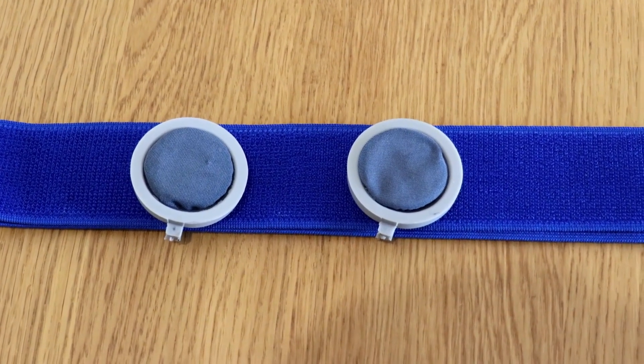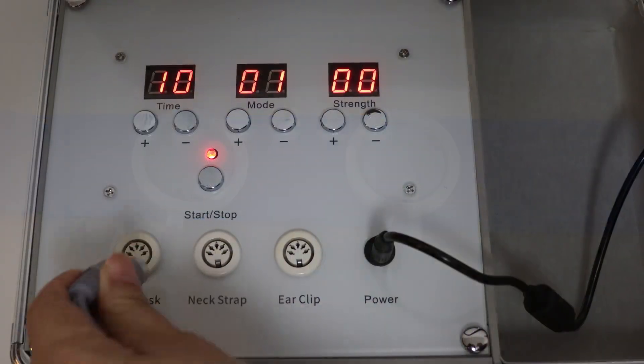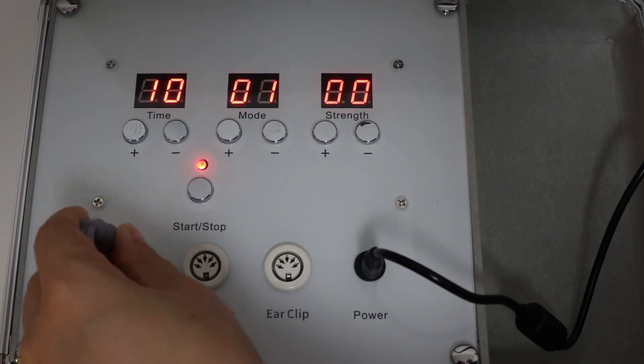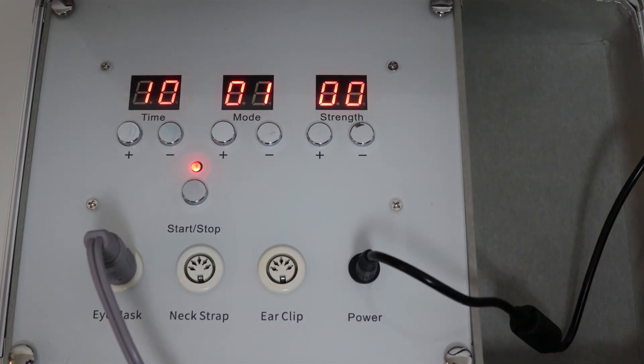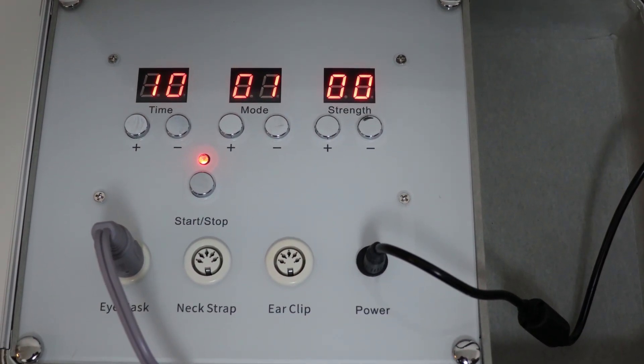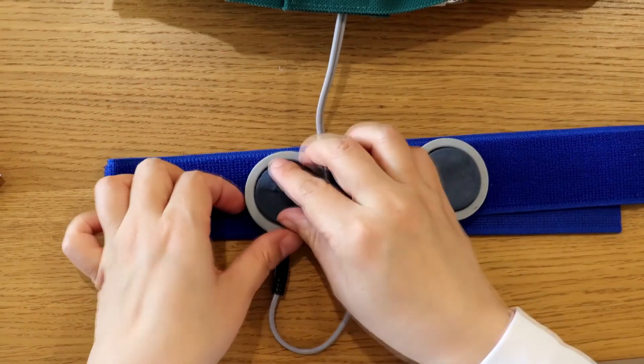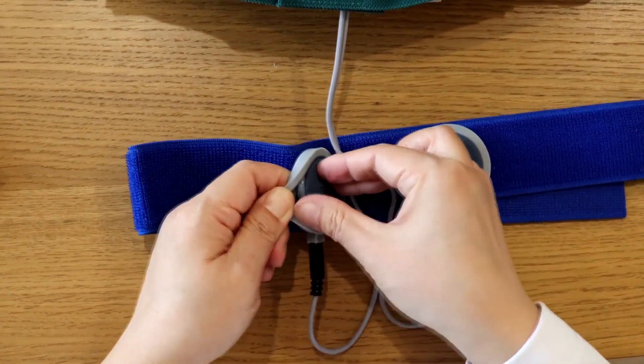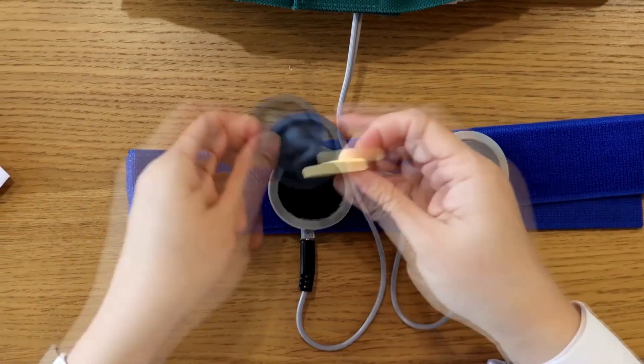Part 4, the final part of the treatment involves the rubber eye pad. First, connect it to the appropriate connector. Next, take the yellow cotton pad, soak it in water, and squeeze out the excess.